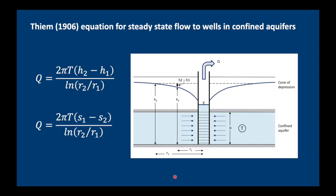In a previous video we looked at the Tiem 1906 equation for steady-state flow to wells in confined aquifers. One of the problems with steady-state is that you have to pump for quite a long time before your cone of depression stabilizes, at least until you reach quasi-steady-state. So that's not always practical.